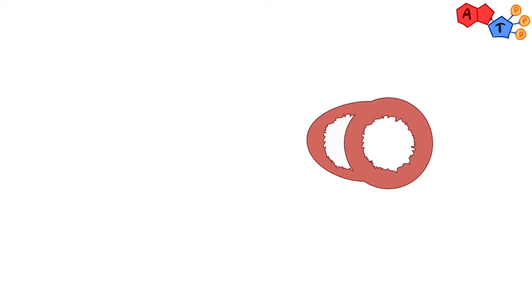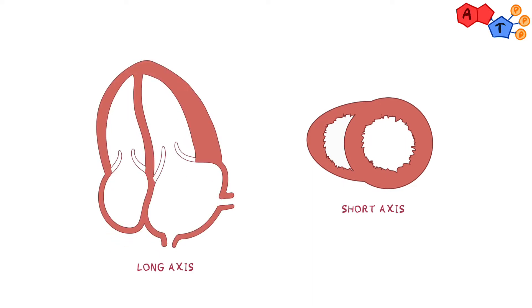We will start our anatomy discussion by drawing a cross-section view of the heart, which can be referred to as the short axis, and here's the long axis view of the heart. Here we have the left ventricle, right ventricle, apex, and the atrioventricular groove.